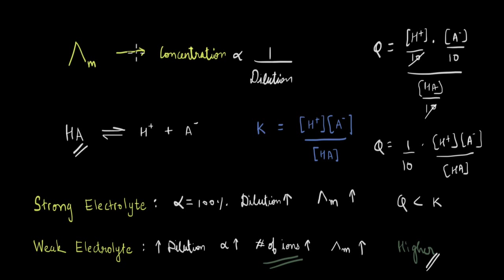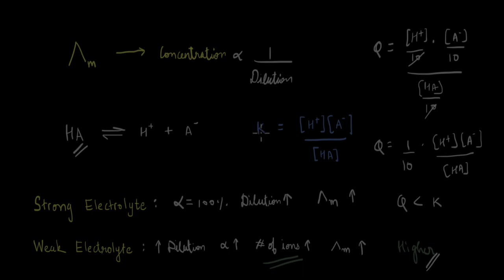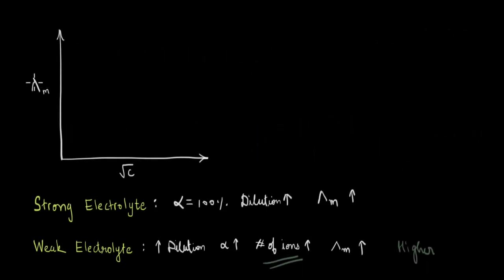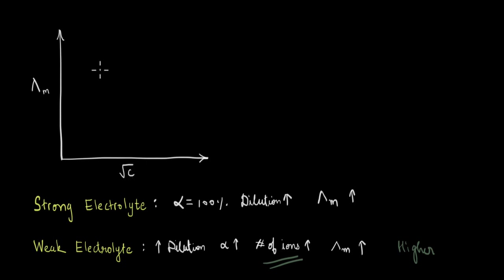The question is, how will this variation look graphically? We want to plot the variation of molar conductivity with concentration, taking two cases: one for a strong electrolyte and one for a weak electrolyte. On the y-axis we have molar conductivity, lambda m, and on the x-axis we have √C, the square root of the molar concentration. One reason we're not directly plotting against C is that when we look at the experimental data, it is easier to fit the data points into a straight line.